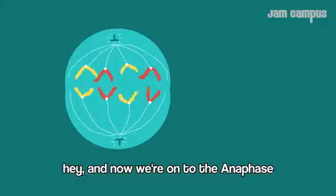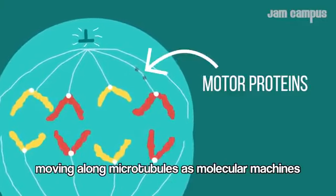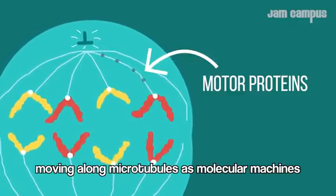And now we're on to anaphase, where sister chromatids separate thanks to motor proteins moving along microtubules as molecular machines.